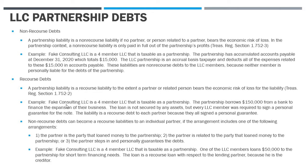Using the same consulting LLC — a four-member LLC — the partnership borrows $150,000 from a third-party bank to finance the expansion of the business. The loan is unsecured, meaning the partnership entity itself hasn't pledged any assets, but every LLC member had to sign a personal guarantee for the note. Banks know that if they loan money to an LLC and it collapses, they may not recover their money, so they require personal guarantees from owners of small closely held companies. In this context, the liability is recourse debt to each partner because they've all signed the personal guarantee.